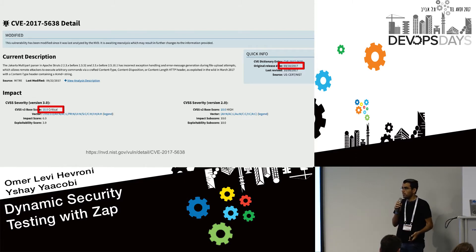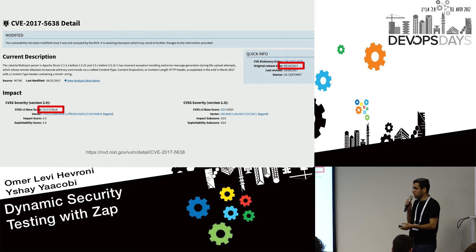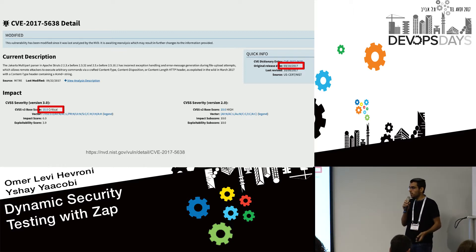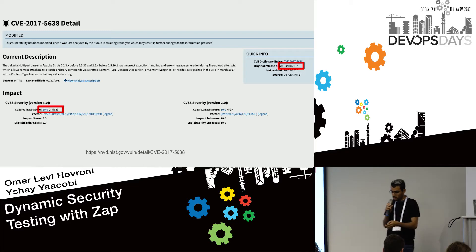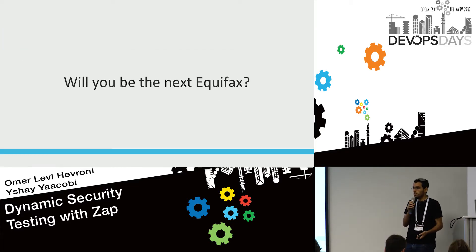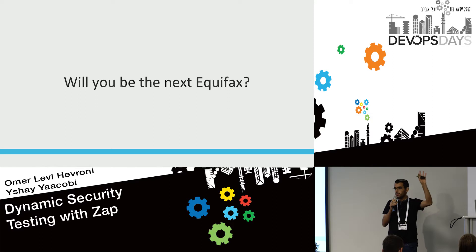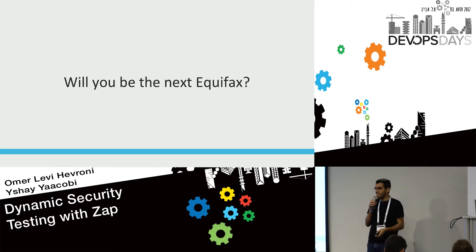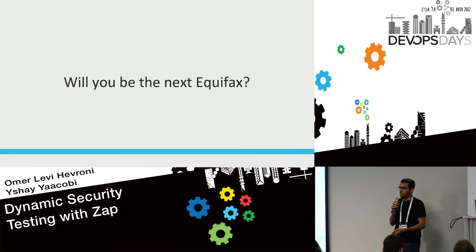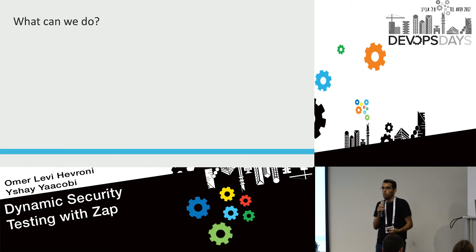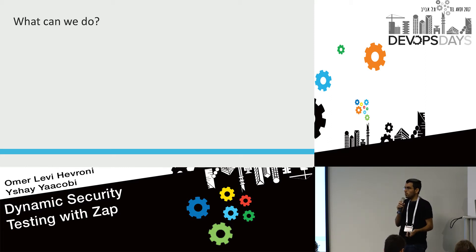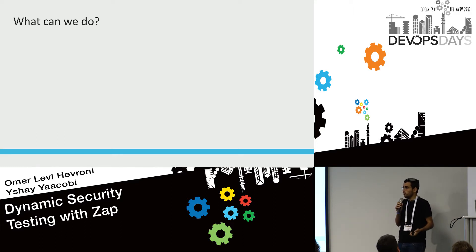So what is my point here? I don't want to blame or shame Equifax — that's not helpful. What we should take from this story is to ask ourselves: can we be the next Equifax? Is this something that could happen to us? This is something that could happen to anyone, and we should all ask what activities we can adopt into our development lifecycle to avoid it.